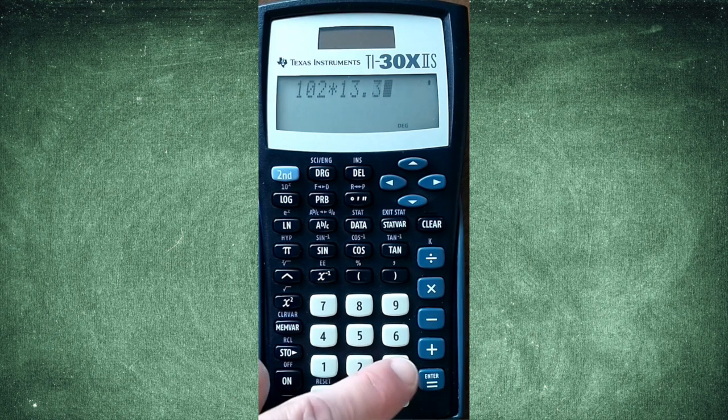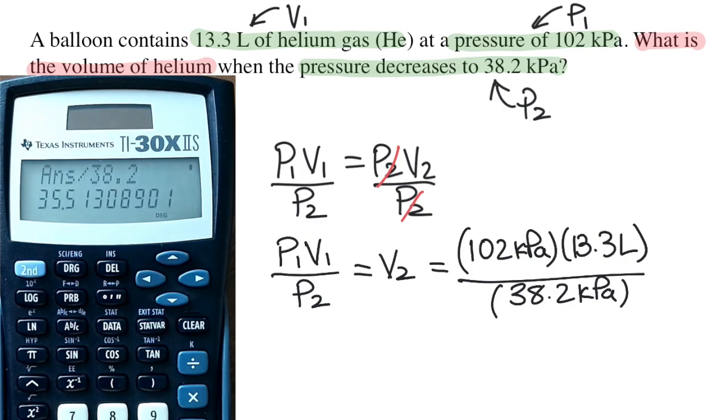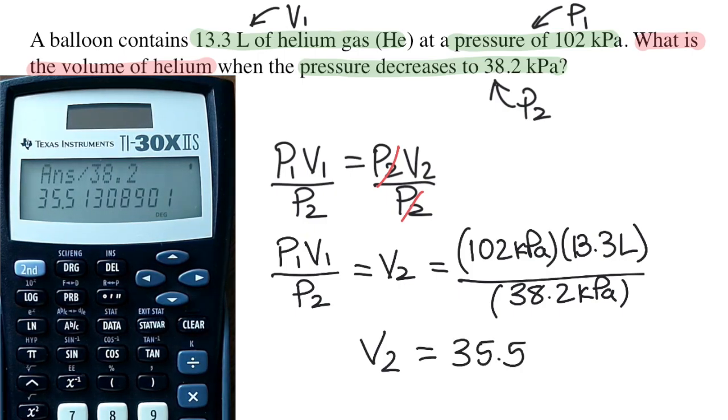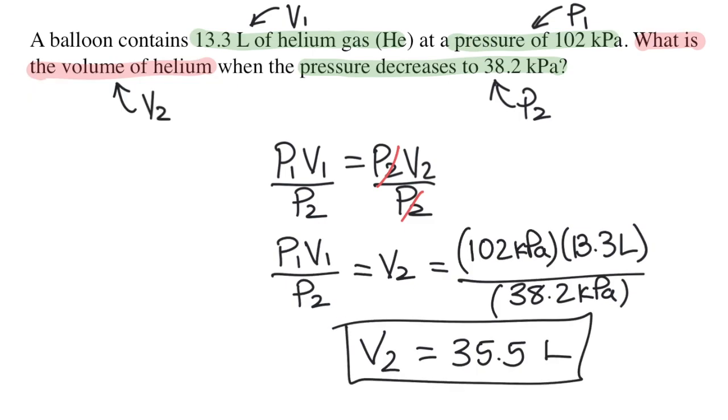Now I can plug all of this into my calculator. I'm going to round my answer to three digits because each of the given variables had three significant digits. And so my answer would be 35.5. And the unit is liters because liters is the unit used for volume.